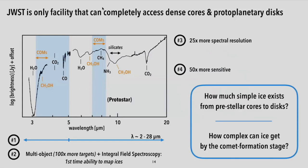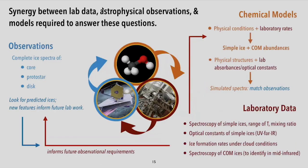This will allow us to answer questions like how much simple ice exists from the pre-stellar core stage through the protostellar envelope into the disk, and whether the processing that occurs to dust grains during star formation affects the complexity of the ices, and whether we have complex organic molecules in the ices by the time we form comets. To answer these questions, we need not only JWST observations, but also a combination of laboratory data and chemical models — because we wouldn't know which molecules to look for without laboratory data indicating where different features are, and we wouldn't know which molecules are most likely to be seen in astrophysical objects without chemical models to take reaction rates from the lab and produce predicted abundances.